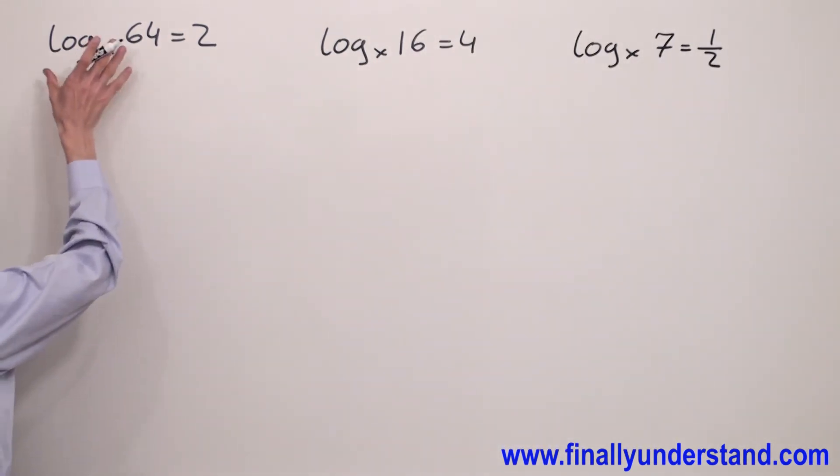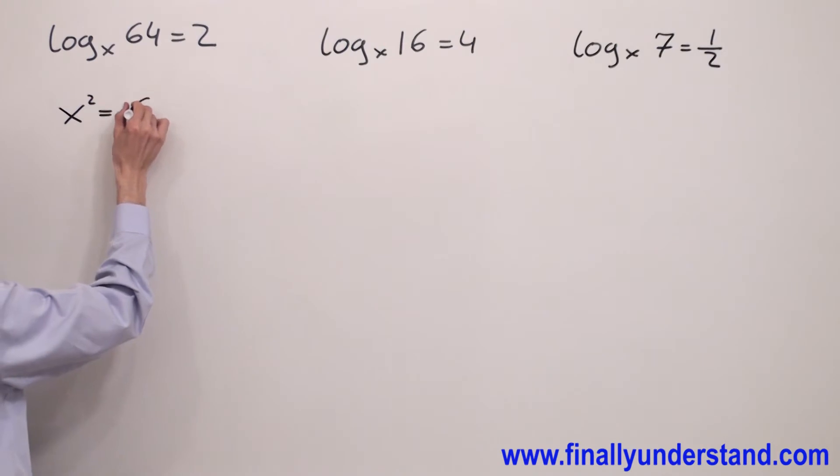We have to convert the logarithmic form to the exponential first. If x to the second power is equal to 64.